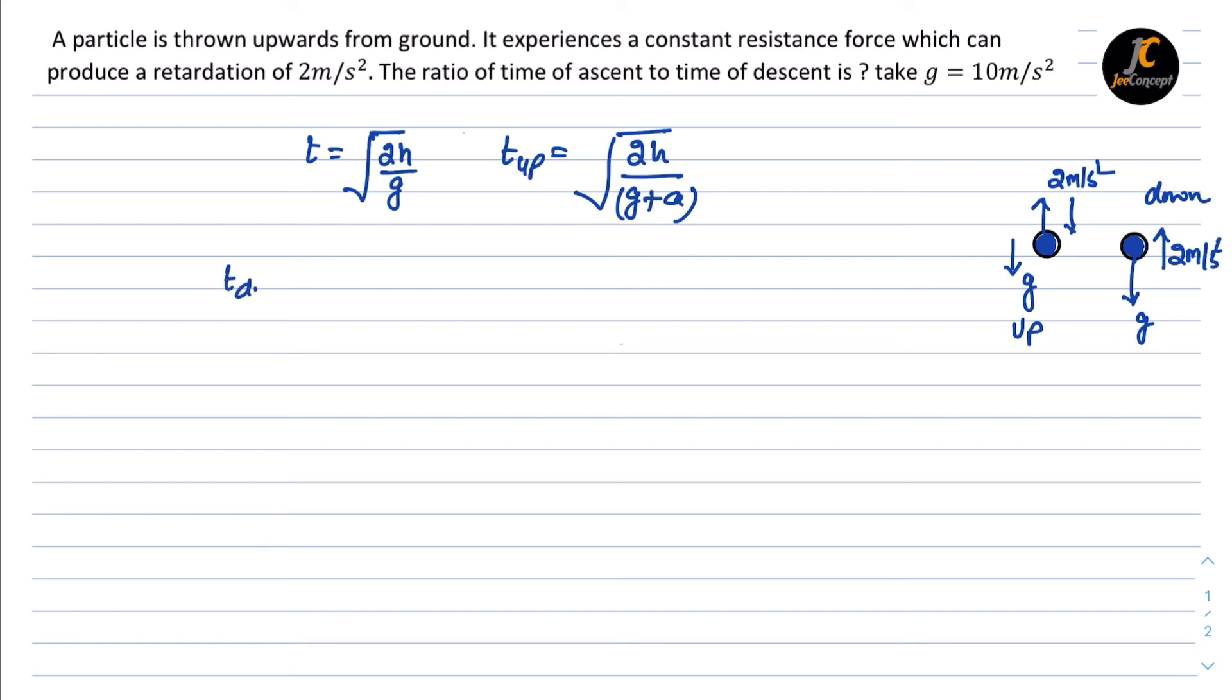In the downward direction, it is going to be t_down = √(2h/(g-a)), since this time they act in opposite directions. We have to find the ratio of t_up to t_down.